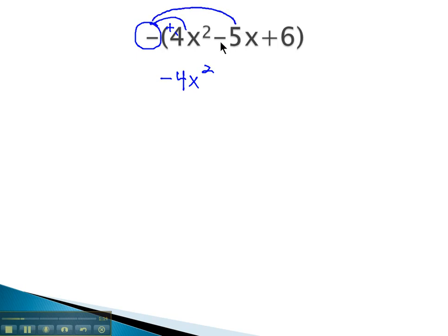We also have to take the opposite of negative 5x. The opposite of a negative is a positive 5x. And we also have to take the opposite of the 6. The opposite of plus 6 is minus 6. And now, we've got the opposite of the polynomial, simply by changing the sign on each term.